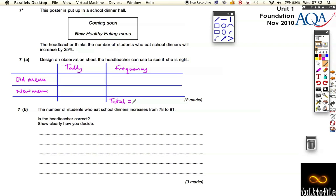Now it says the number of students to eat school dinners increases from 78 to 91. And she says you need to find out whether the headteacher was right, so whether it has increased by 25%. So what it's changed, if it's changed from 78 to 91,